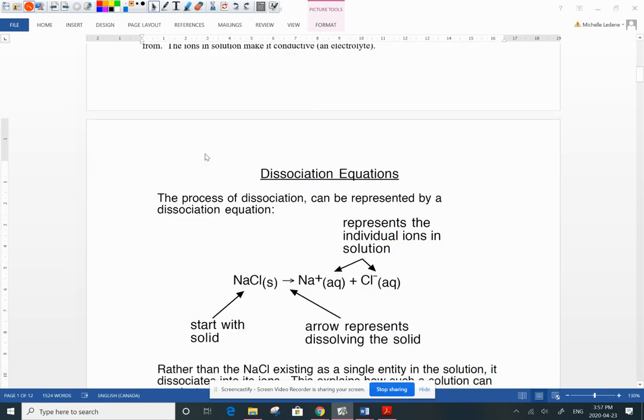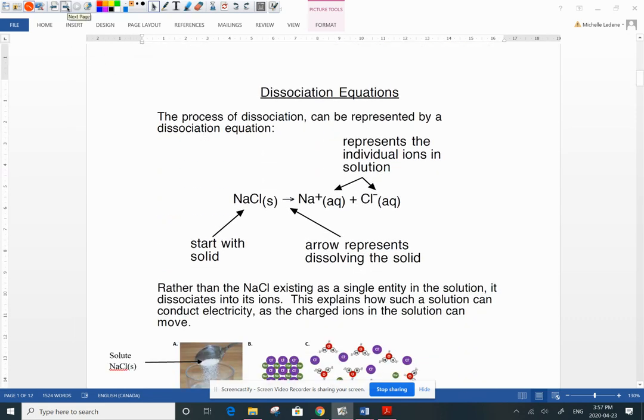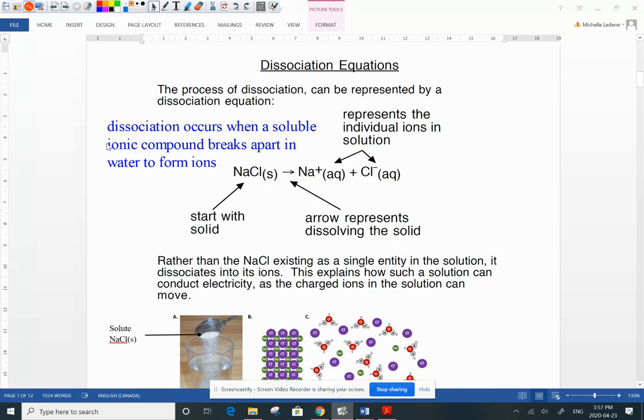When you have a soluble ionic compound like sodium chloride, salt is an example of that, we started out with a solid solute and we dumped it into some water and it dissolved. Not only did it dissolve it also broke apart into its ions and so we call that it dissociated. So we see that it doesn't stay just as sodium chloride it now becomes individual sodium and chloride ions.